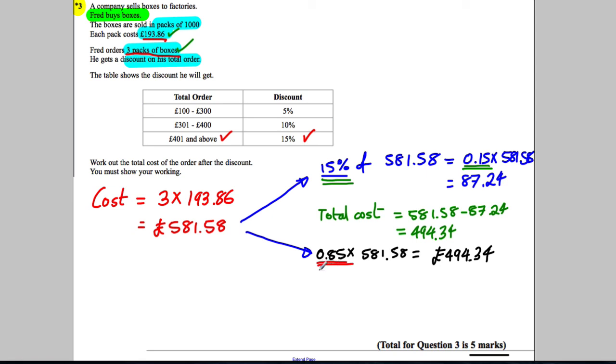A quick way of doing it is if you know that a reduction of 15% is the same as multiplying by 0.85, which is 1 subtract 0.15 if you're wondering where I got that from. And therefore you get the answer: £494.34.